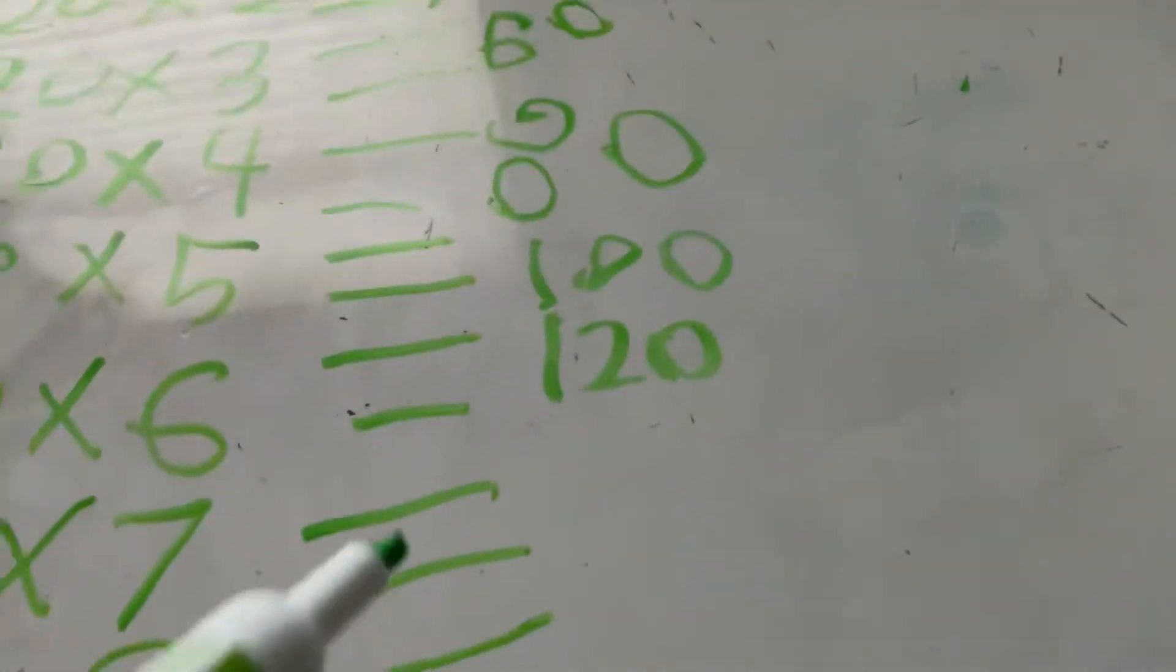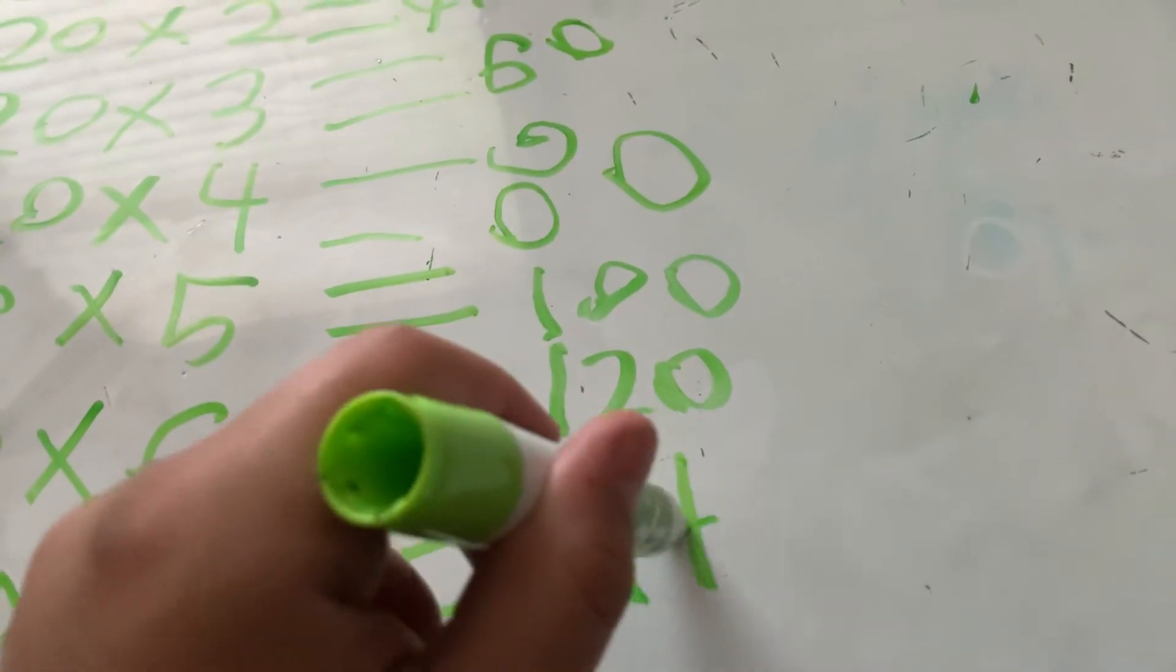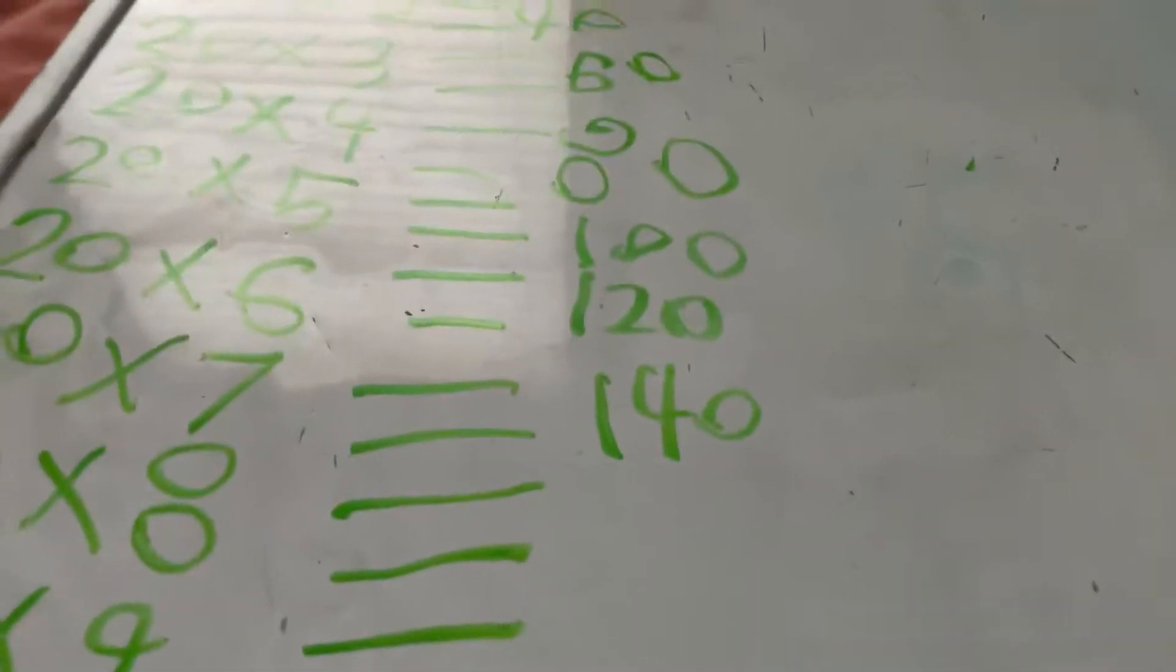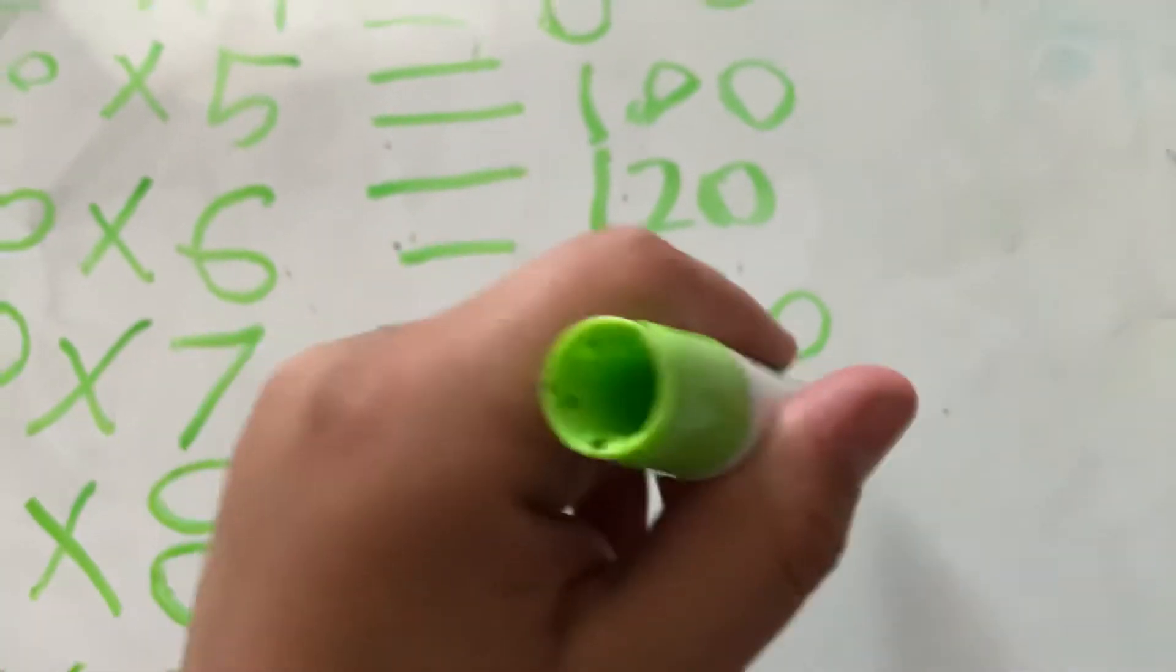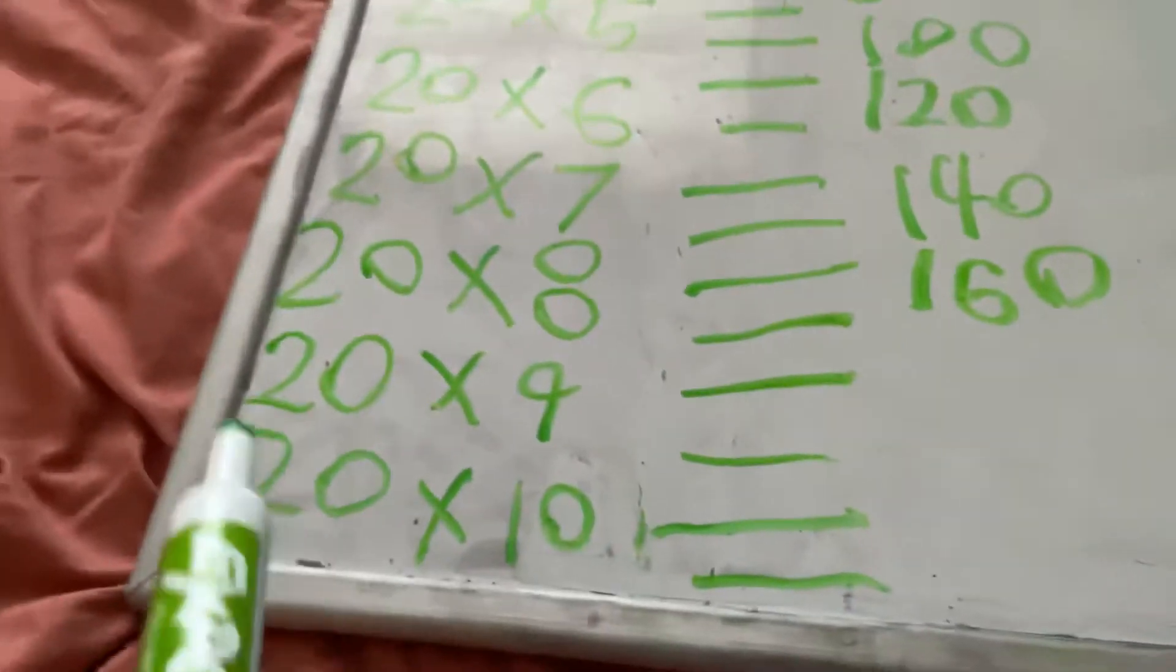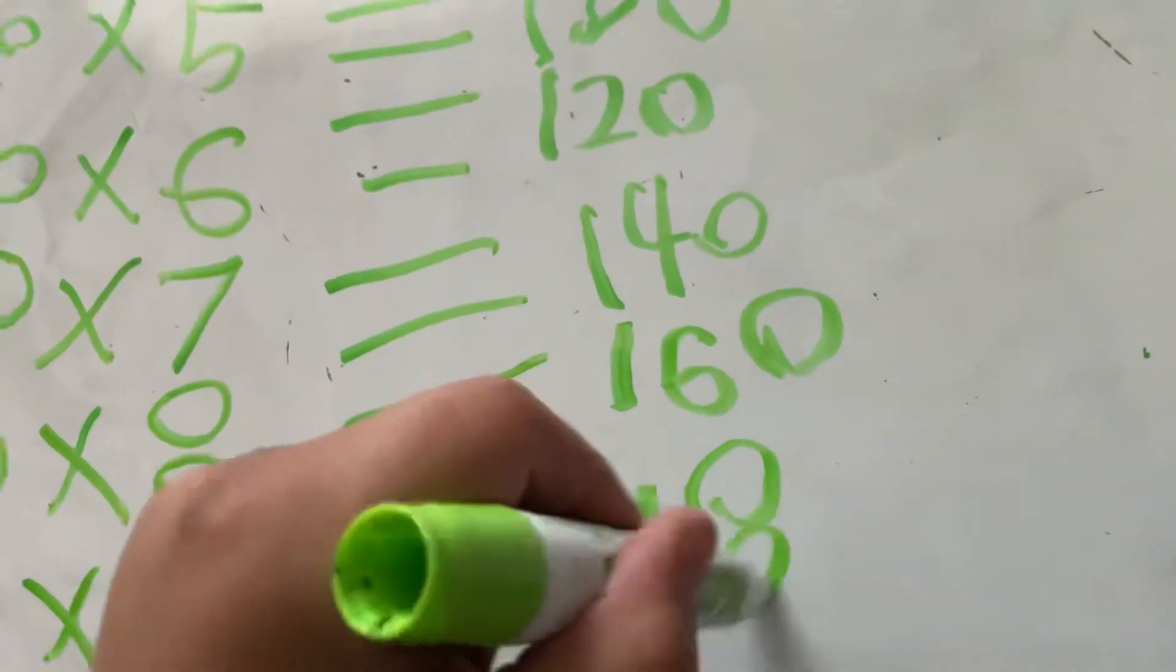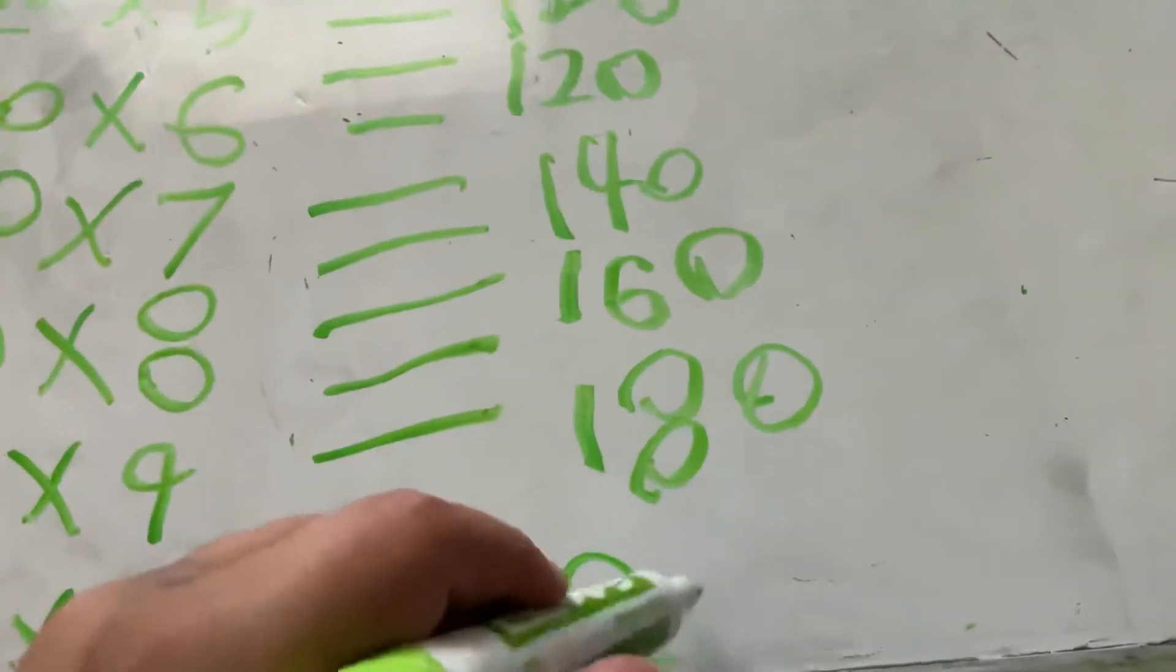And 20 times 7 is 140, and 20 times 8 is 160, and then 20 times 9 is 180, and then 20 times 10 is 200.